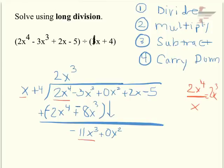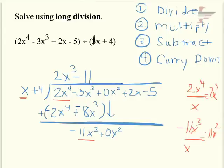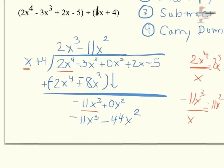I divide my new first term by x again: negative 11x cubed divided by x is negative 11x squared, so that goes up top as minus 11x squared. Then I multiply: negative 11x squared times x is negative 11x cubed, and negative 11x squared times 4 is negative 44x squared.